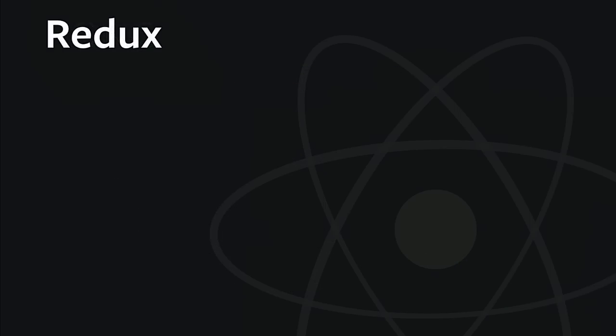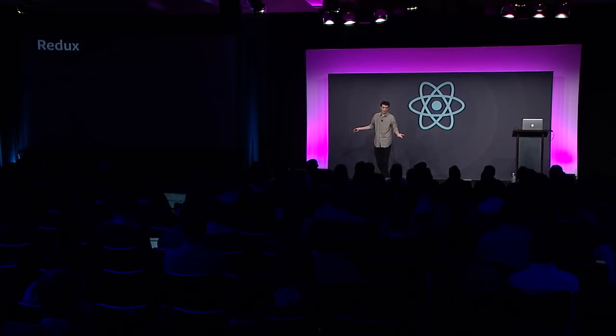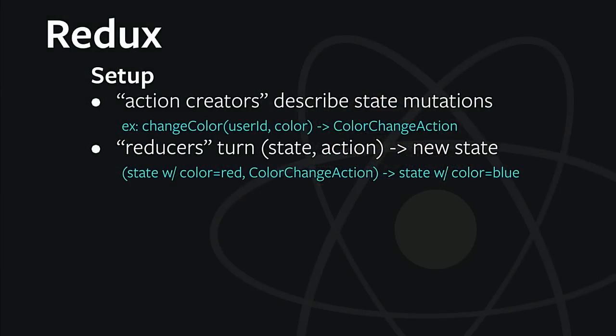Redux is probably the most popular way to do this right now. It came out as the answer to the Flux question — there were lots of Flux libraries, and now everyone only talks about Redux, and for a lot of good reasons. Redux has made some very specific design choices in addition to Flux that make it advantageous. To set up, we have action creators and reducers that work together to change our state. The action creator describes what we're going to do — we're going to update the color — and then the reducer takes that description and returns a new state so that we can effectively mutate.